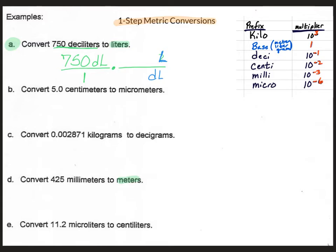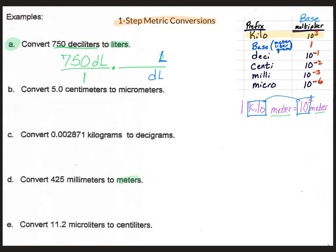One way to remember how the multipliers work is to remember that the prefix has a meaning. The word kilo means a thousand — a thousand times bigger than the base. So the multipliers are going to be stuck with the base unit: the meter, the liter, or the gram. And the one with the prefix is going to get the one. So in the case of kilo, we would say that one kilometer is equal to 10 to the third meters — we're just replacing the word kilo with 10 to the third. In the problem we're looking at, we have deciliters and liters, so we write: one deciliter is equal to 10 to the minus 1 liters.